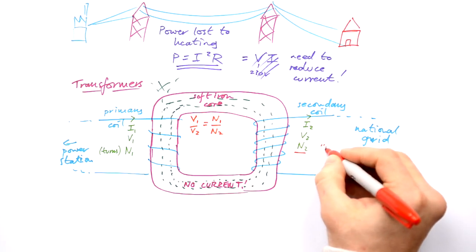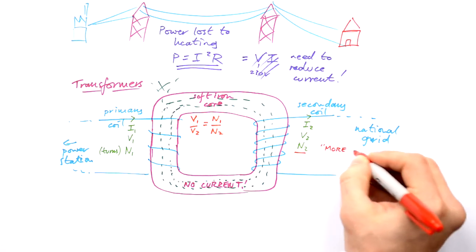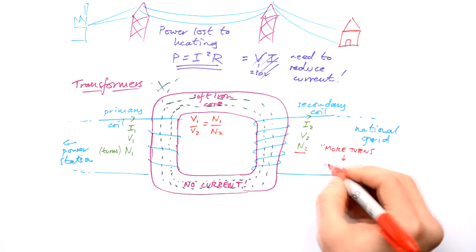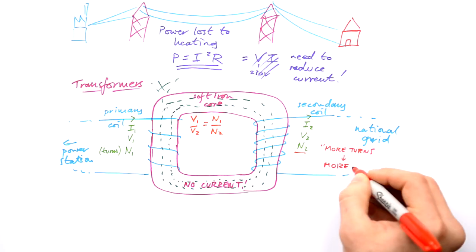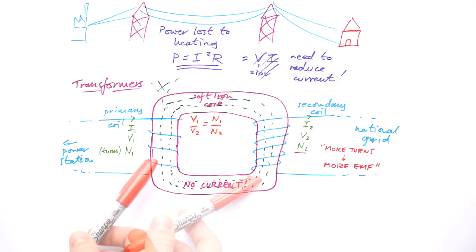So in other words, more turns equals more EMF, if I can put it as crudely as that. So more turns equals a higher EMF being induced than the PD applied across the primary coil here.